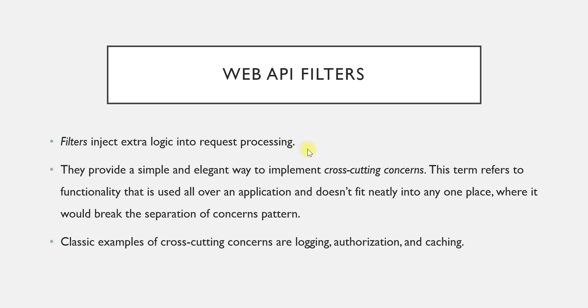Filters inject extra logic into request processing. Whenever our action method gets executed, whatever logic we have mentioned in our filter gets executed automatically. Basically, filters provide a simple and elegant way to implement cross-cutting concerns. Cross-cutting concern is a term which refers to functionality that is used all over an application but doesn't fit into any single place.